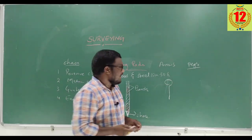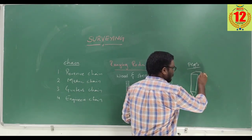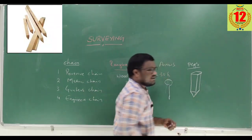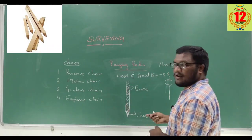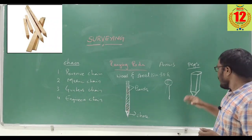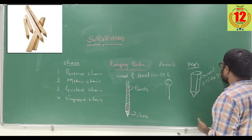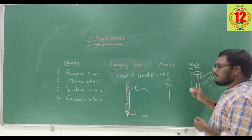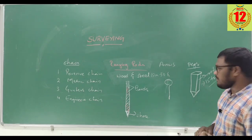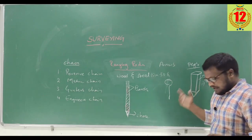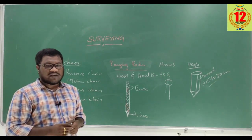Another instrument is the peg. Pegs are made up of iron or wood and are 15 to 30 centimeters in height. They are used for fixing of stations after doing the survey or for fixing other points. Nowadays, the usage of wooden pegs has decreased and they have been replaced by iron rods or similar materials.